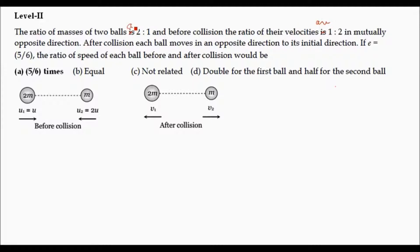How will we solve this problem? The figure pertaining to this problem has already been shown. The ratio of masses of two balls is 2:1, so if the mass of the first ball is 2M, the mass of the second ball is M. The ratio of their velocities is 1:2, so U1 is written as U and U2 is written as 2U. These two balls are moving in mutually opposite directions — this is the case before collision.